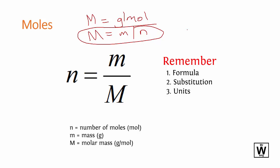If you rearrange that, multiply both sides by n, that crosses out. Divide both sides by capital M, that crosses out. There you go, you've got number of moles equals mass over molar mass, and you can work it out that way.